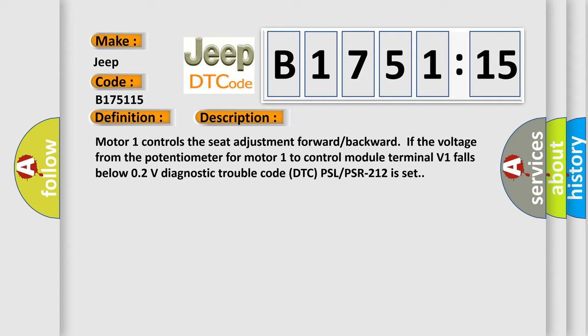Motor 1 controls the seat adjustment forward backward. If the voltage from the potentiometer for motor 1 to control module terminal V1 falls below 0.2V, diagnostic trouble code DTC PSL PSR 212 is set.